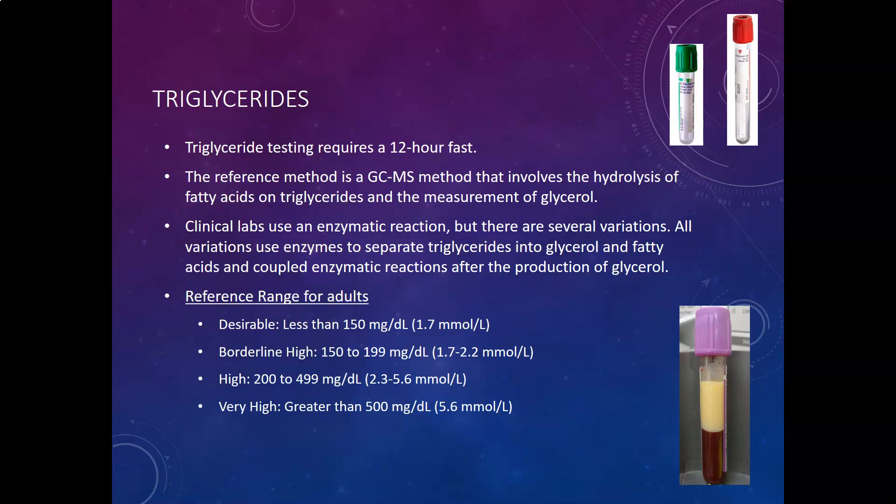Triglycerides require a 12-hour fast. The reference method is GC-MS, which involves hydrolysis of fatty acids from triglycerides and measurement of glycerol. Clinical labs use an enzymatic reaction with several variations. All variations use enzymes to separate triglycerides into glycerol and fatty acids, then perform enzymatic reactions to measure glycerol production — usually using an enzyme that produces hydrogen peroxide, followed by peroxidase for a color change proportional to glycerol, which is proportional to triglycerides.